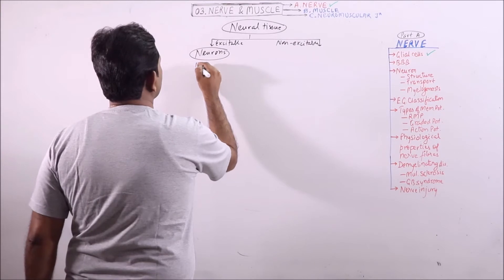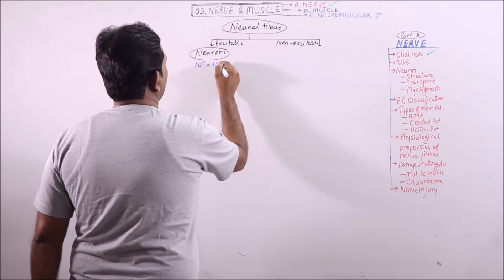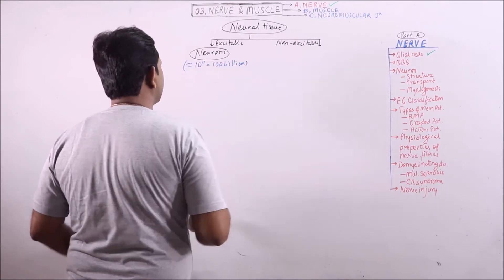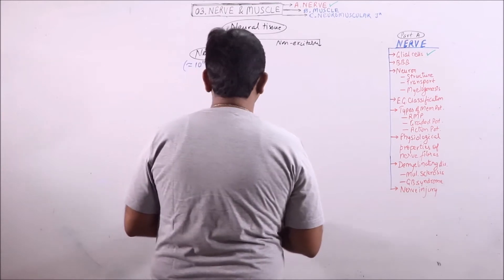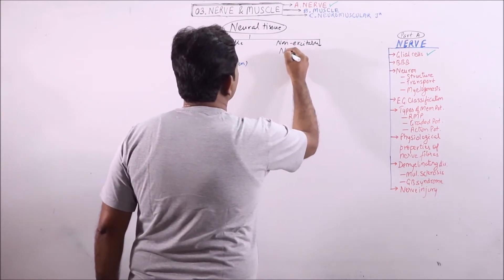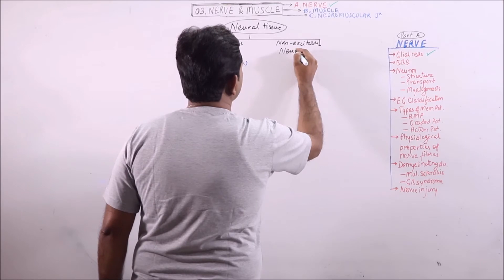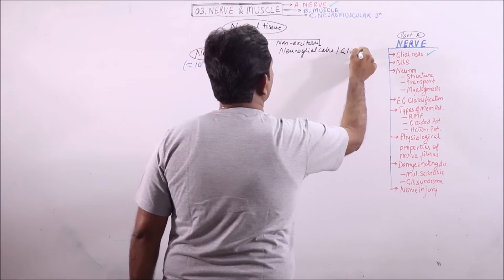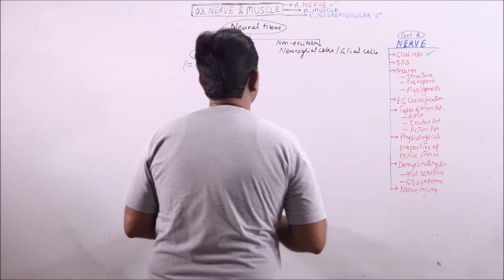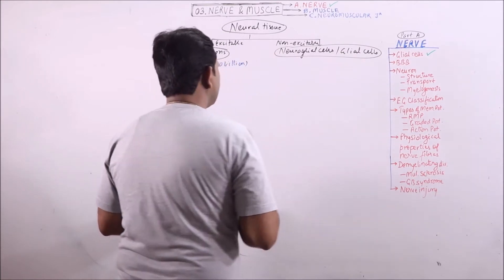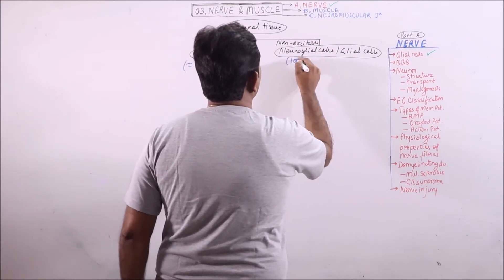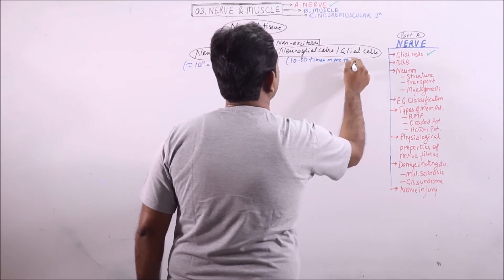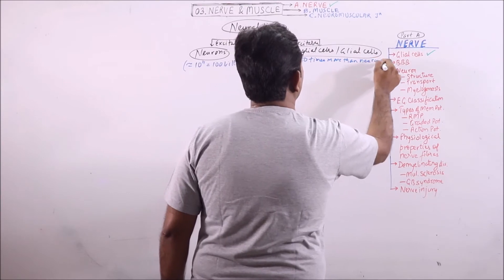These are approximately 100 billion in number, while the non-excitable cells include neuroglial cells or glial cells. These are 10 to 50 times more than neurons.